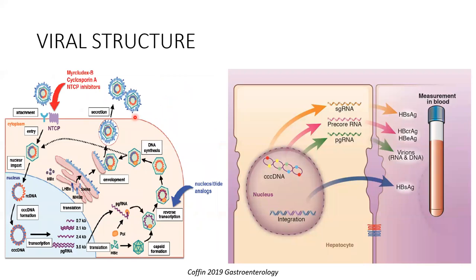The virus enters through the NTCP receptor, loses its envelope during uncoating, and the genetic material — initially in relaxed circular DNA form — changes into covalently closed circular DNA (cccDNA), which is very important. This transcribes into multiple proteins including the pre-genomic RNA. Because it is a DNA virus converting to RNA, reverse transcriptase is used. One strand helps in protein production; from the RNA it becomes DNA again, gets packaged, and is secreted. Importantly, the virus does not undergo lysis like other viruses, although it is hepatotropic. A recent update shows that cccDNA produces three RNAs, including the pre-genomic RNA. An upcoming trend is to measure RNA levels apart from DNA levels.